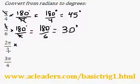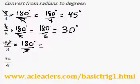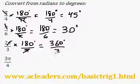How about 2pi over 3? Let's again multiply it by 180 over pi. The pi's cancel out, and we get 2 times 180 — that's 360 degrees — all over 3. The 3 comes from the bottom. 360 divided by 3 is 120 degrees.